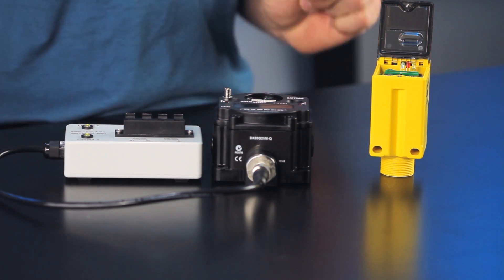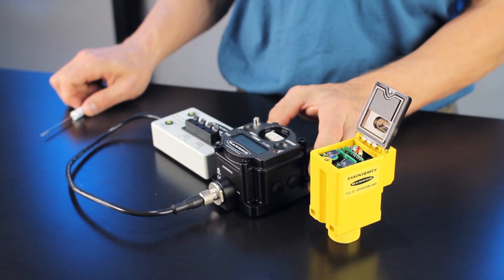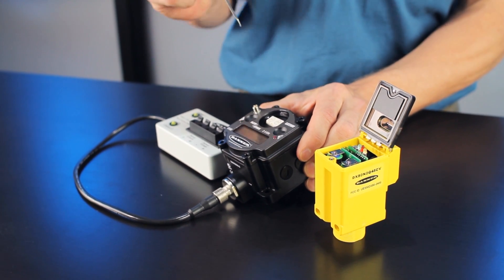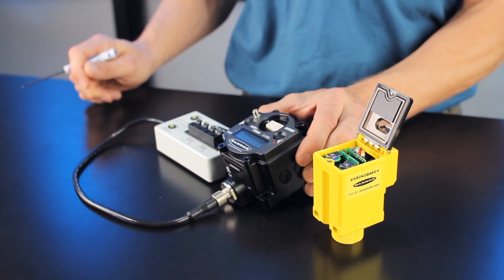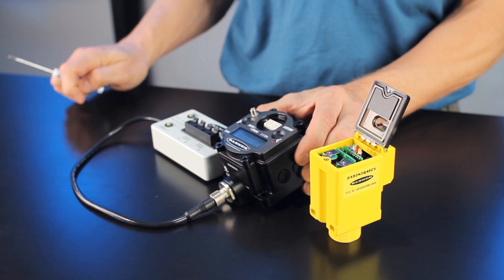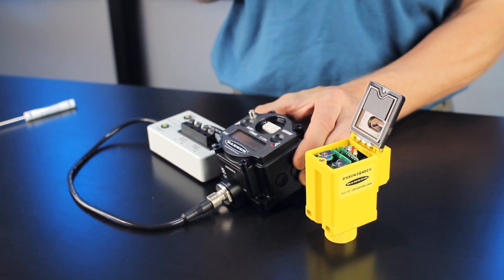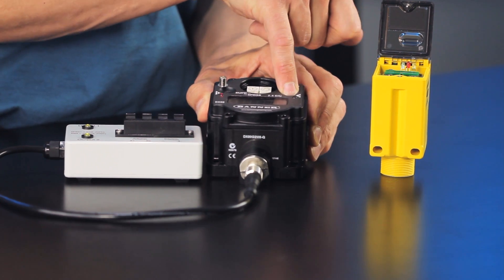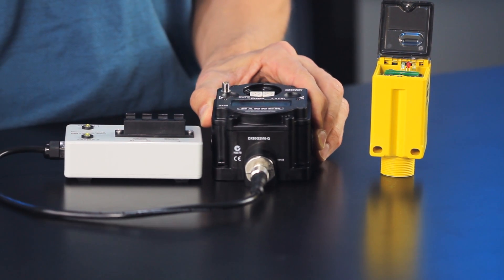Now if I had more than one sensor, at this point I would set the address to 2 for the second sensor and triple-click the button on the second sensor. But because I only have one sensor, we're done and I'll double-click this button to exit the binding mode on the gateway.